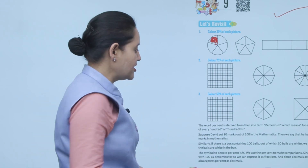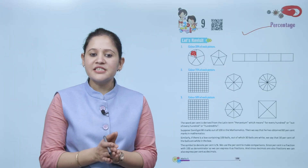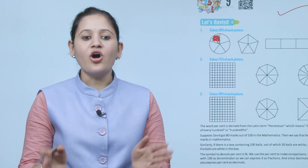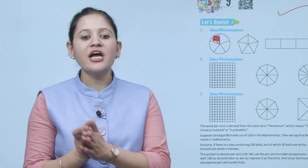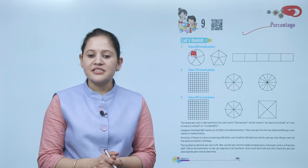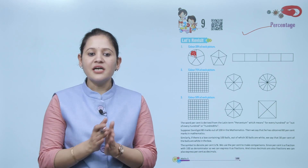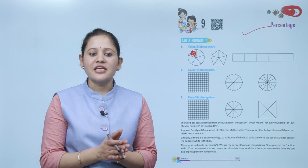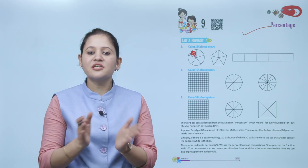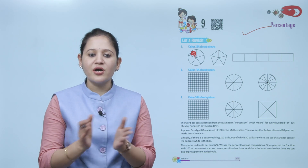The word percentage is derived from the Latin word 'percentum,' which means 'for every hundred' or 'out of every hundred.' For example, suppose David got 80 marks out of 100 in mathematics — we say he obtained 80% marks. Similarly, if a box contains 100 balls out of which 30 are white, we say 30% of balls are white.